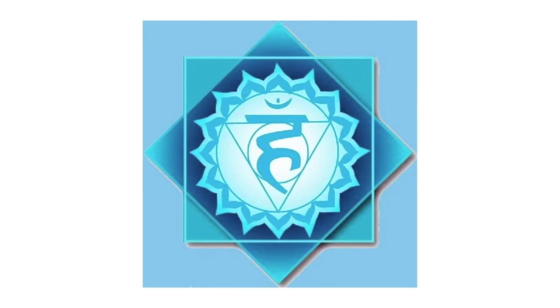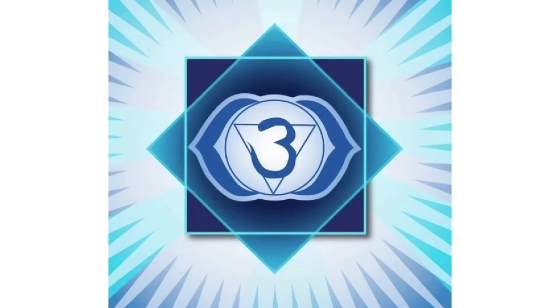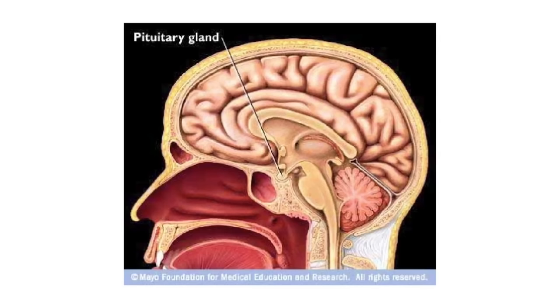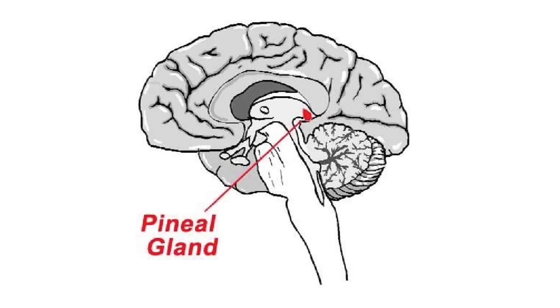The fifth is expression, and connects to the thyroid. The sixth is the third eye, which is psychic and intuitive, and connects to the pituitary gland. Finally, is the crown chakra, which is the spiritual chakra, and connects to the pineal gland.